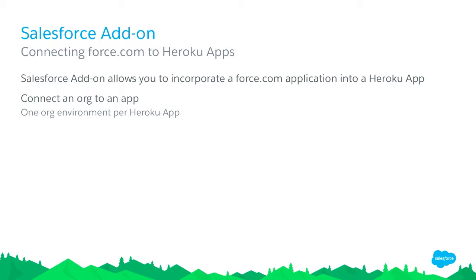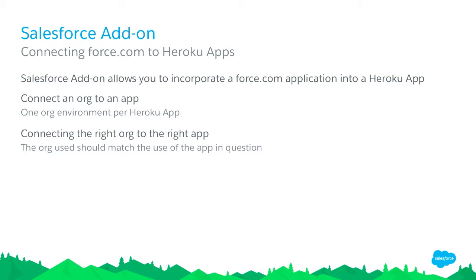Through this add-on, we'll bring you into this wonderful deployment tool from the Heroku side. It lets you incorporate one org environment per Heroku app. The key thing is making sure we get the right org connected to the right app. I've mentioned a bunch of different kinds of environments — production orgs, sandbox orgs, development environments — and we need to figure out how to get them all connected.